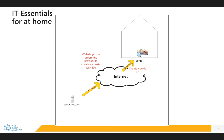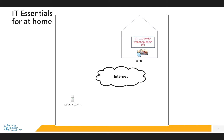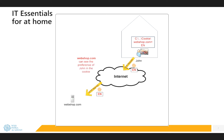So when the reply arrives at the browser of John, the browser will create a small file on the disk of John, a small file containing webshot.com is EN. A cookie is unique per website — each website has its own cookie. In this case, webshot.com ordered the browser to create a cookie, and the content of the cookie should be EN. From now on, all requests of John to webshot.com will contain this cookie. In the HTTP request there's a small piece of data which we call a cookie, and in the cookie it's stated EN.